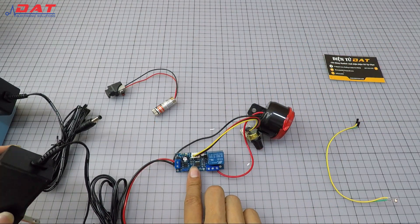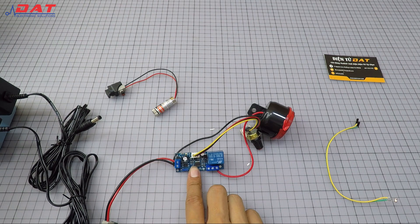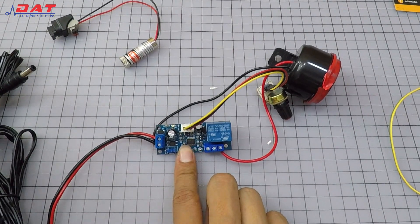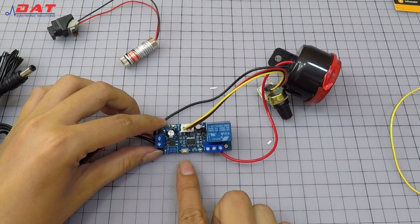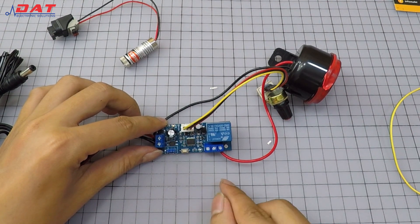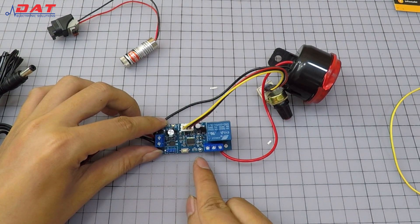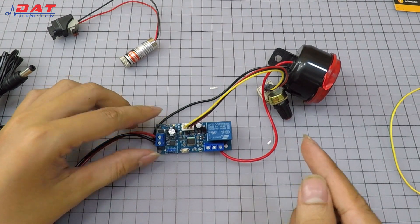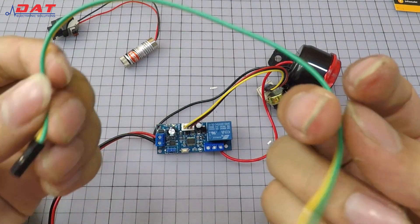First, press and hold the button. Then apply power. The LED on the board will blink continuously. Release the button. Now press the button twice, then wait about 3 seconds. The circuit will automatically save mode 2 by blinking slowly twice.